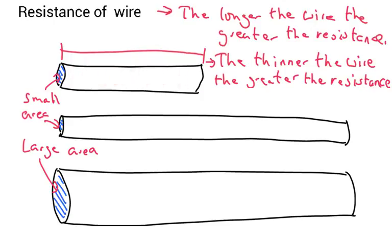Another way you can change the resistance of a wire is the thinner the wire, the greater the resistance. So we've got this wire here and this wire here. This wire here would actually have more resistance than the wire with the larger area. And the reason why is if you think of like a highway...